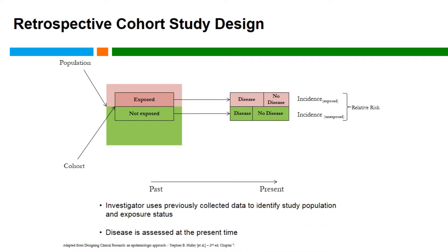The diagram of a retrospective cohort is very similar, but the difference is that the cohort was established in the past, and the incidence of disease among the exposed and unexposed populations was ascertained between the past and the present, including the present. In this case, the investigator uses previously collected data to identify the study population, the exposure status, and the disease incidence, keeping in mind that the disease may also be assessed at the present time.